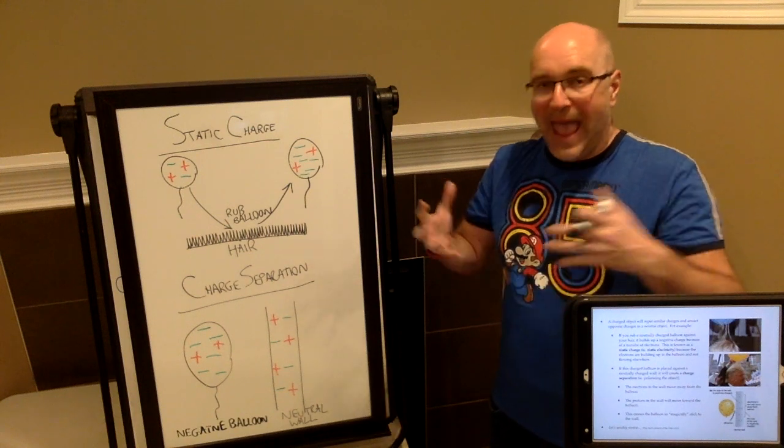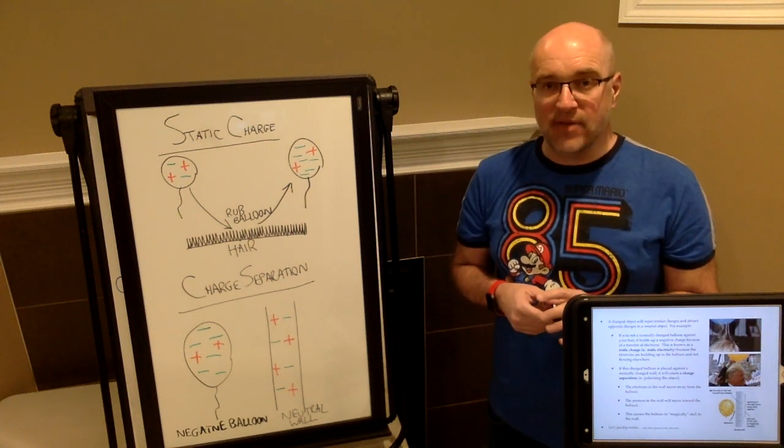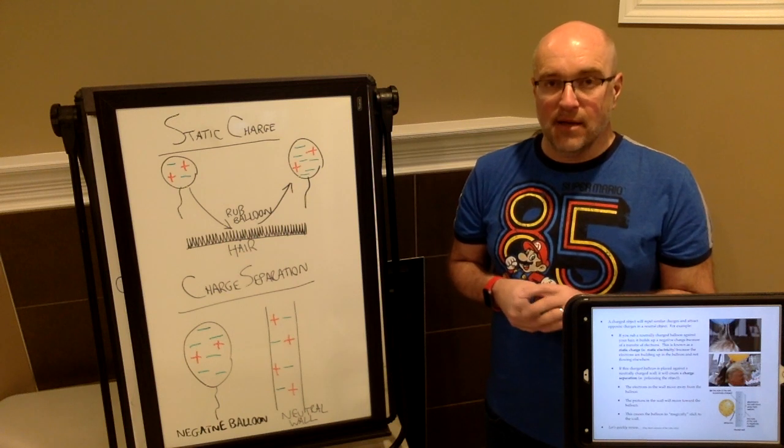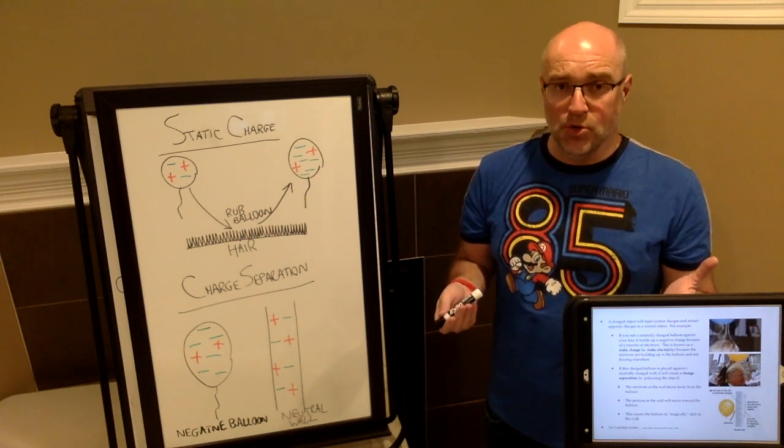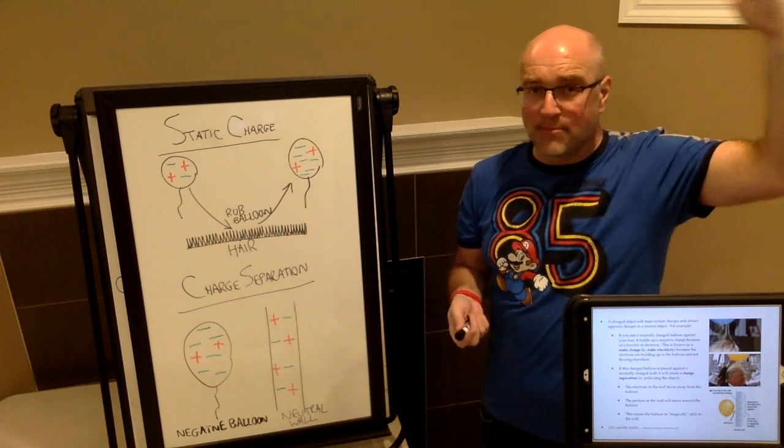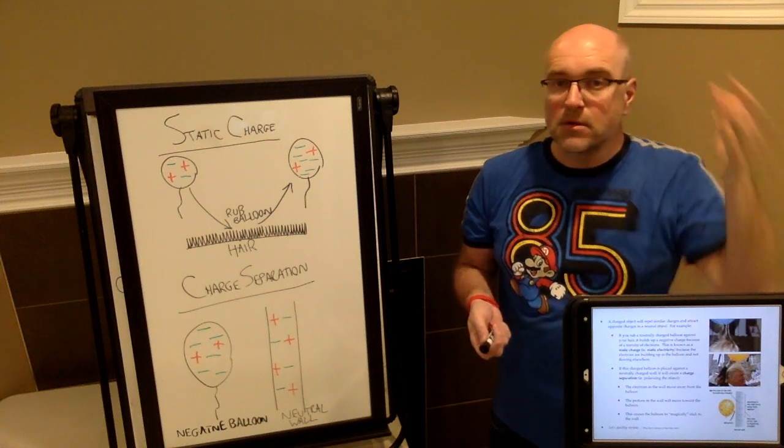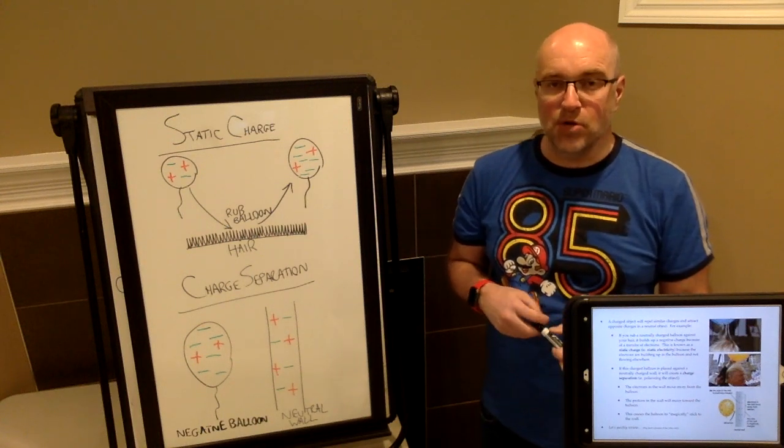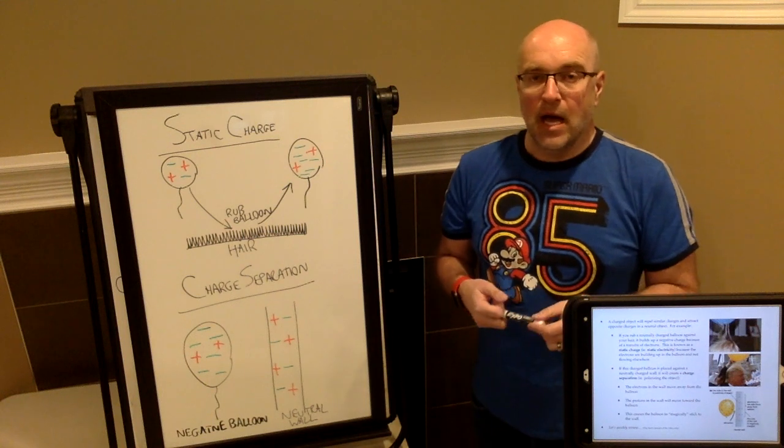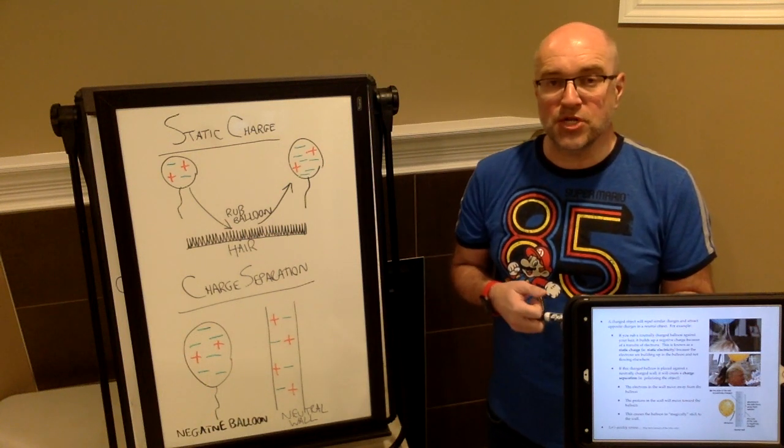By adding these electrons to the substance, we are giving it what we call a static charge. We know what happens when we take a balloon, rub it against your head, and put that balloon beside the person. The hair, if it's long enough, would actually now stick to the balloon. There is some kind of an attraction there, which is weird because the hair, in theory, should be neutrally charged.